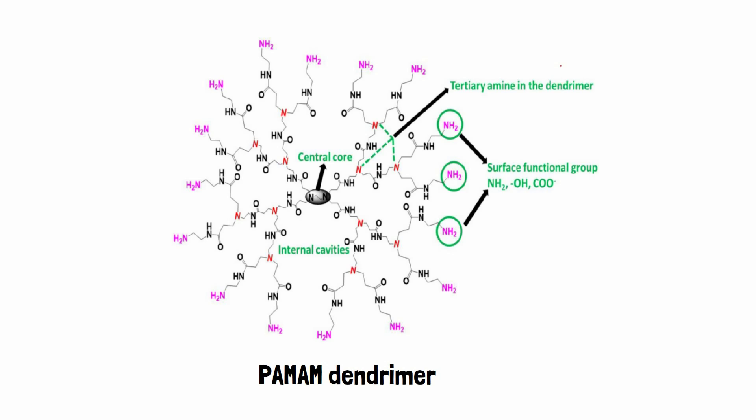PAMAM dendrimer possessing an ethylenediamine central core and methyl acrylate has different generations, G0 to G10, named as generation 0 (G0), generation 1 (G1), and so on.